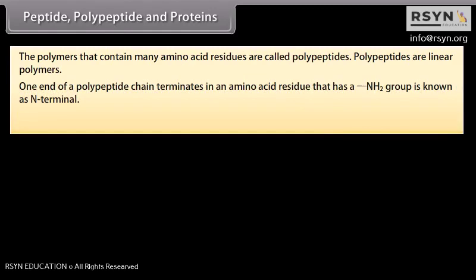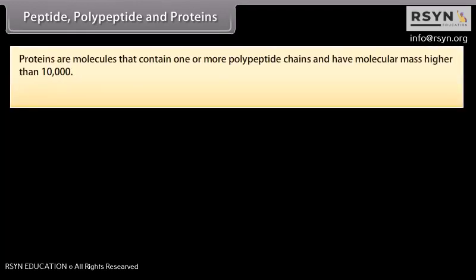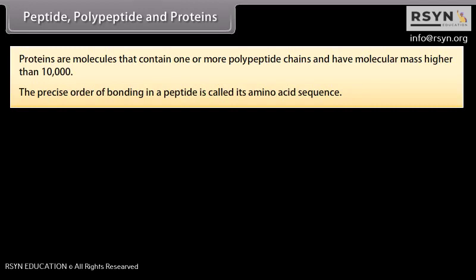Proteins are molecules that contain one or more polypeptide chains and have molecular mass higher than 10,000. The precise order of bonding in a peptide is called its amino acid sequence, specified using three-letter amino acid abbreviations connected by hyphens.